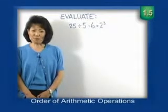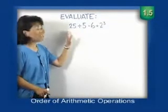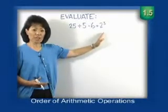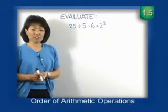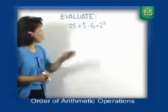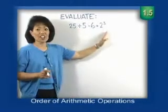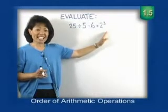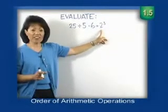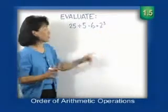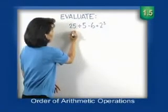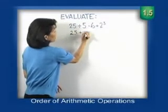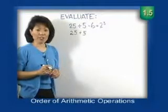Let's look at our first expression. We're going to evaluate this long line of numbers. Because of our order of operations, we know what to do first. We check for parentheses — there are none. We move to step two: simplify any exponents. We see we have an exponent at the end, 2 to the third power. So we're going to rewrite this. If you do this each time, you'll avoid mistakes.